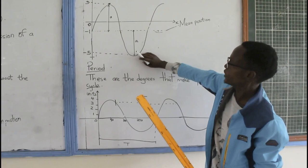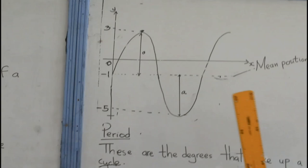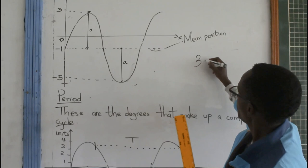So, how do you find the position of your mean position? You just find the difference between the 2. You find 3 minus negative 5. You get 8.